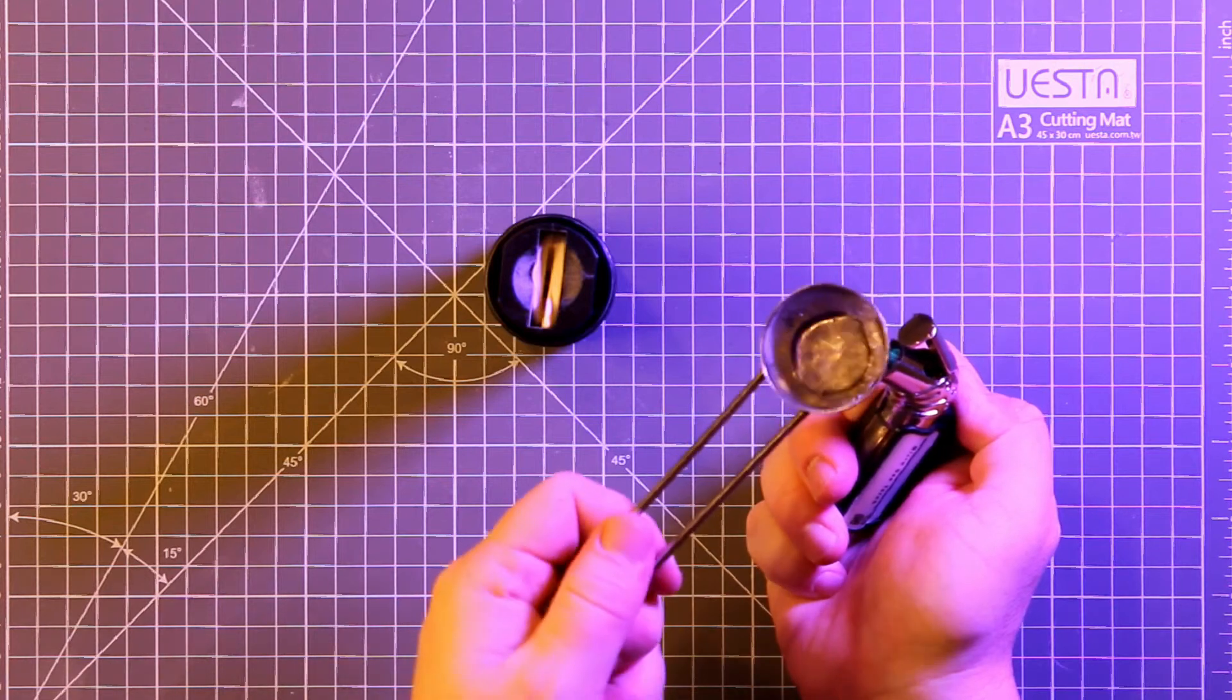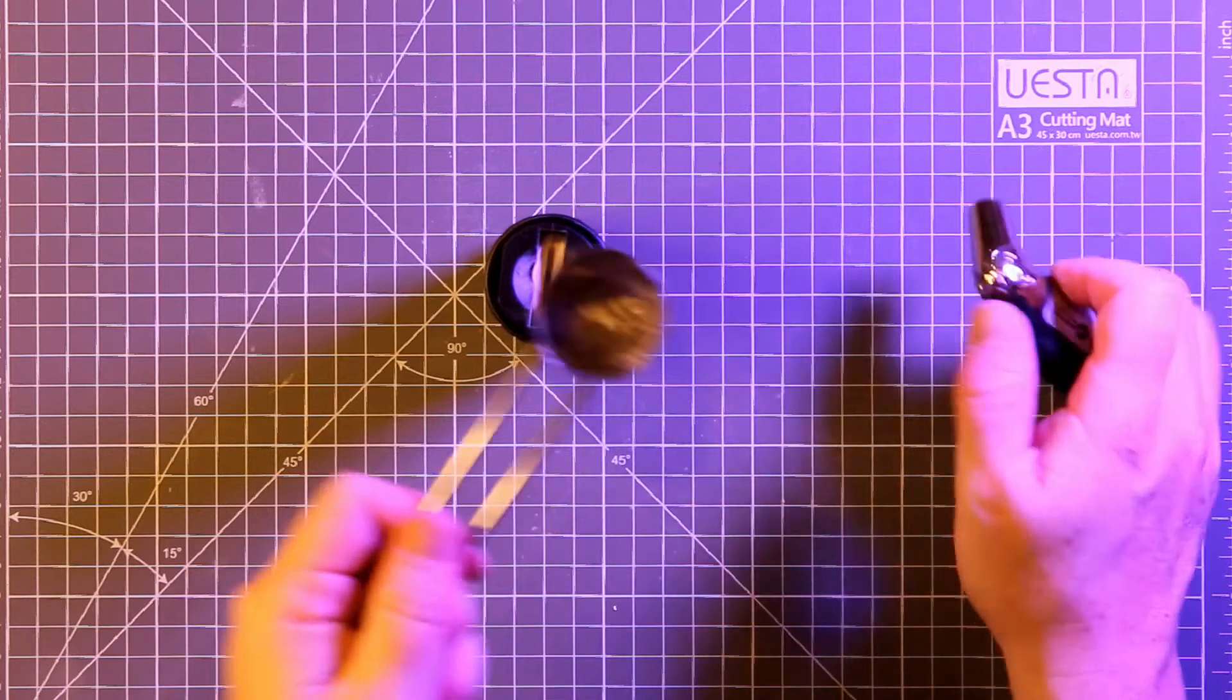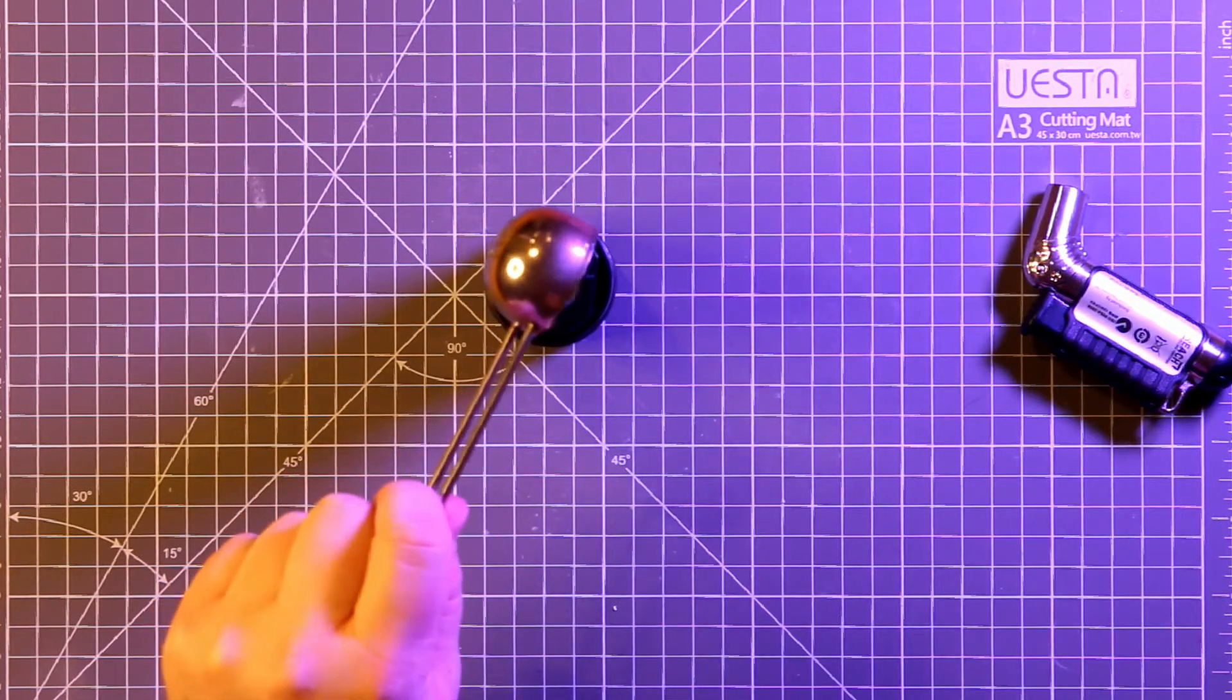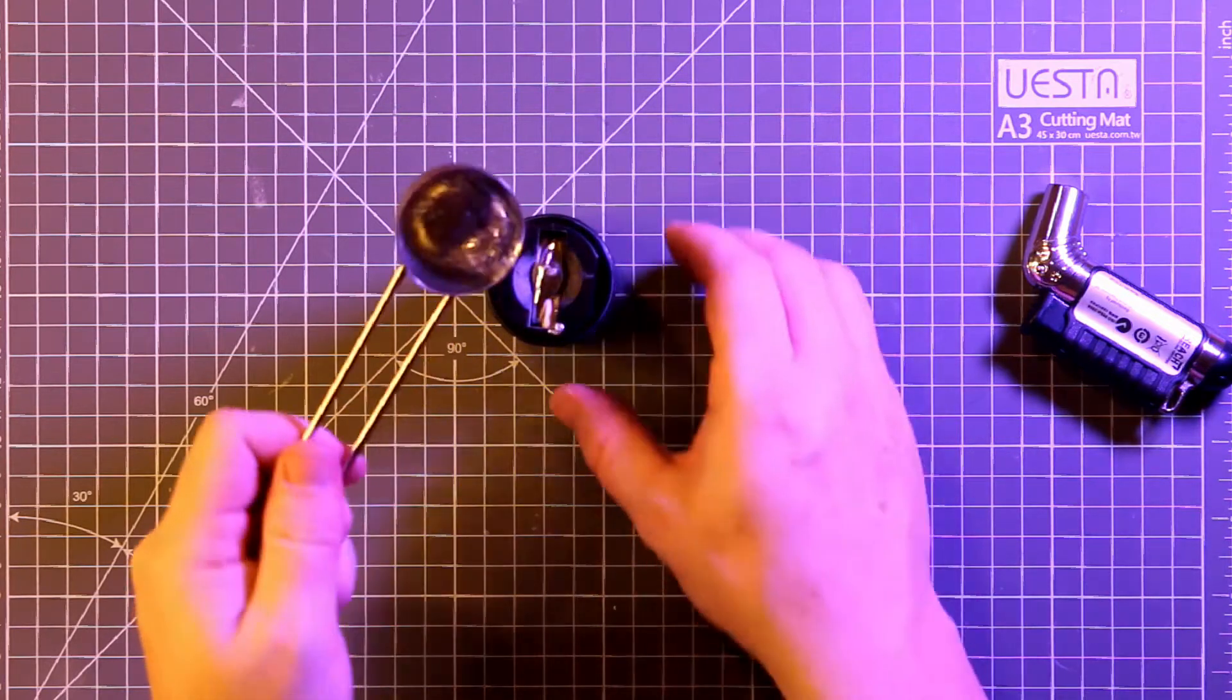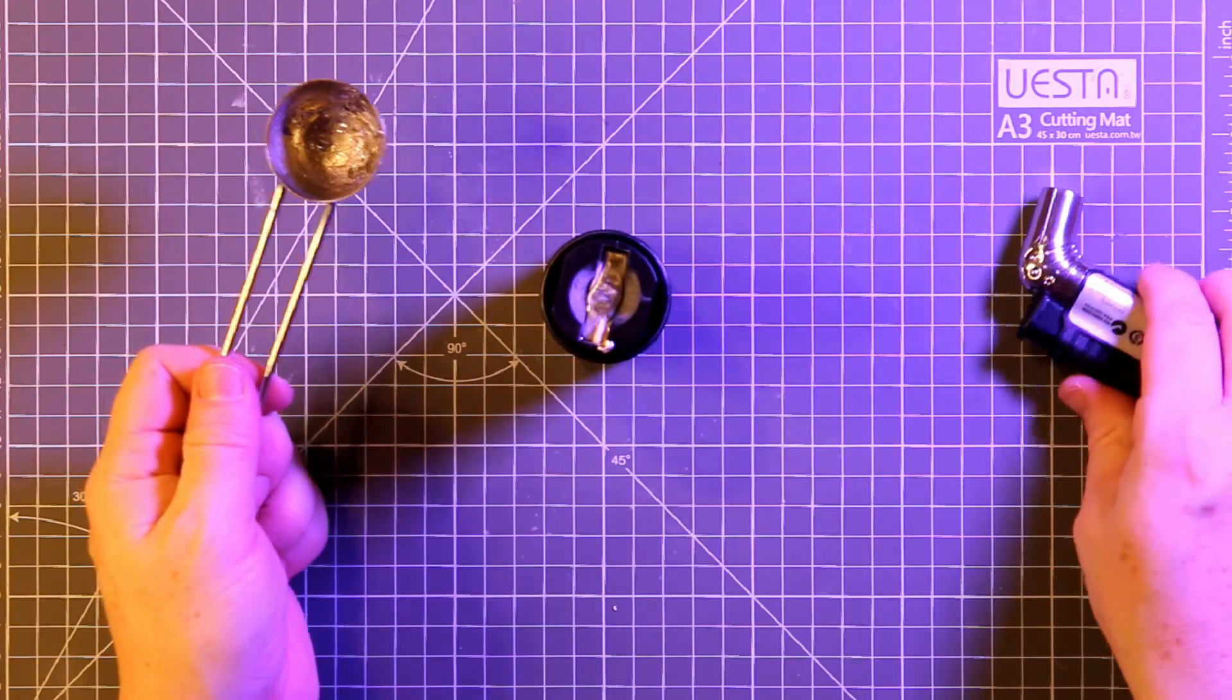Once it's looking nice and liquid we pour the metal into the mold and then we're just going to give it a few taps to get rid of any air bubbles and then it's just a case of waiting a few minutes for everything to cool down.